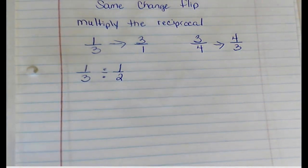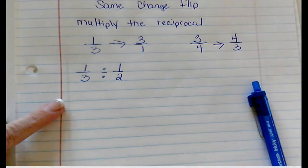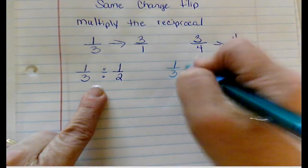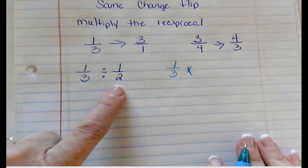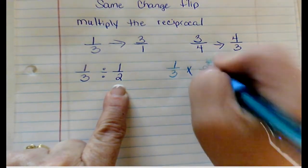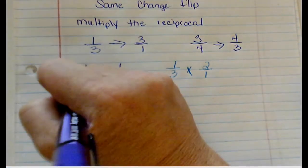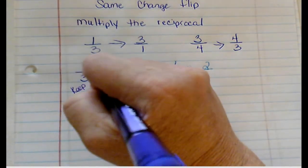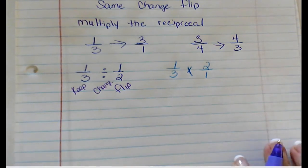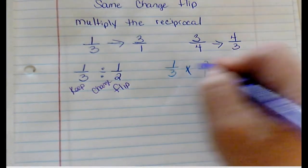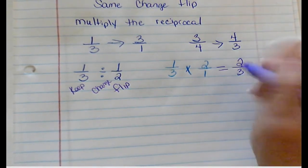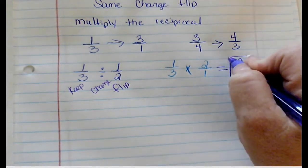I am going to keep 1/3 the same, I'm going to change my division to multiplication, and I'm going to flip the second one to 2 over 1. So I'm going to keep change flip. So now I have a multiplication and you know how to do multiplication. 1 times 2 is 2, 3 times 1 is 3, so my answer is 2/3.